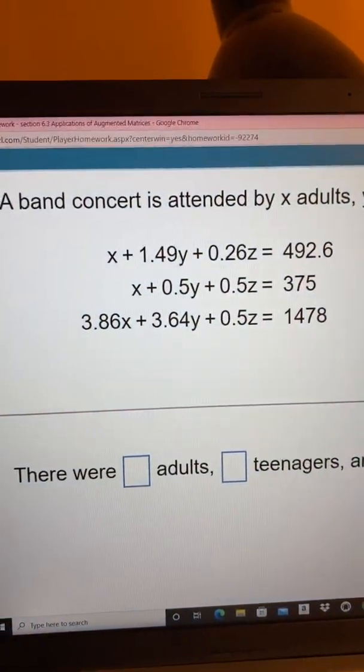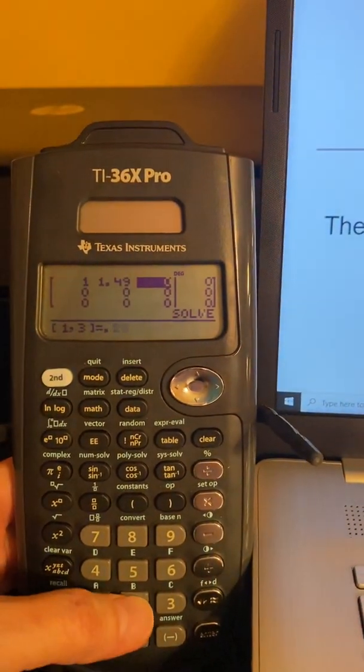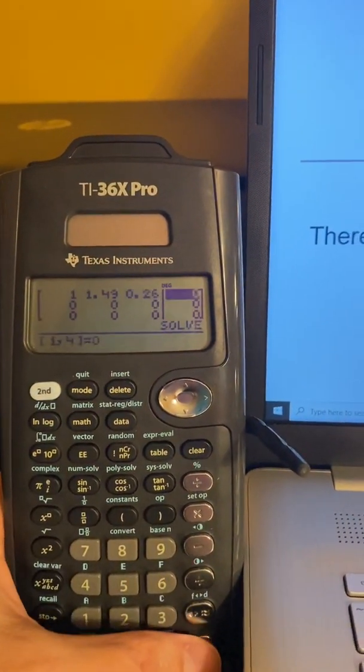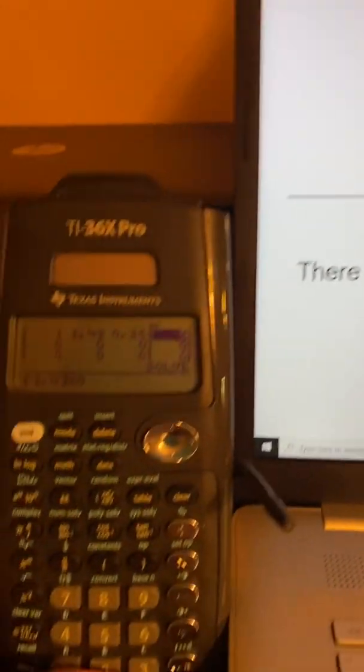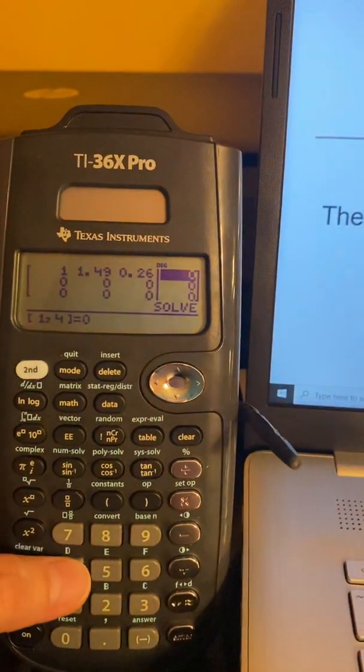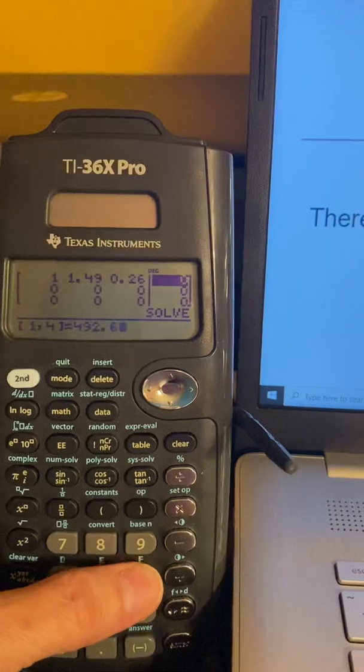And then the coefficient of my z term is 0.26. So I put in 0.26, hit enter. And then we see that it equals 492.6. So I put in 492.6.